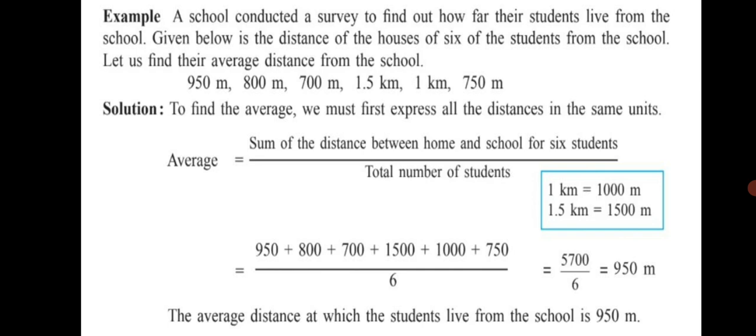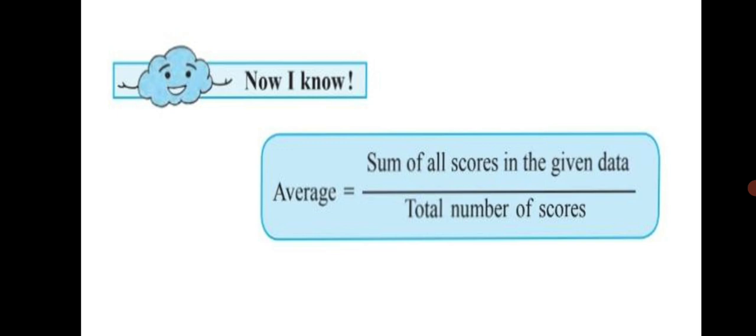This way the units have to be same if you are comparing numbers to find the average. Whenever we are adding, the units have to be the same for the given numbers. Now based on this average concept, we are going to solve practice set number 54. Average equals sum of all scores in the given data upon total number of scores. Let's begin with practice set 54.